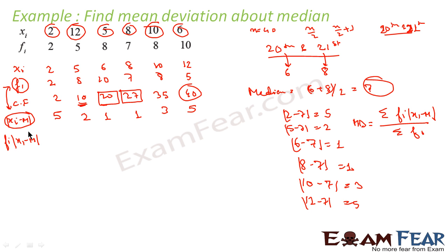This is nothing but 5 into 2 is 10. 8 into 2 is 16. 10 into 1 is 10. 7 into 1 is 7. 8 into 3 is 24. 5 into 5 is 25.